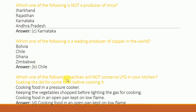Which one of the following practices will not conserve LPG in your kitchen? Soaking the dal for some time before cooking it. Cooking food in a pressure cooker. Keeping the vegetables chopped before lighting the gas for cooking. Cooking food in an open pan kept on low flame. The answer is cooking food in an open pan kept on low flame.